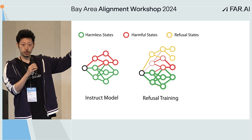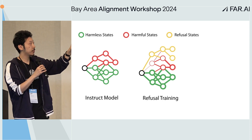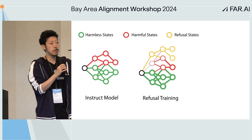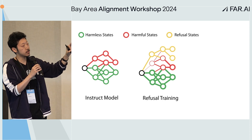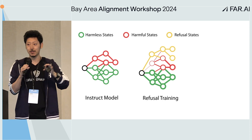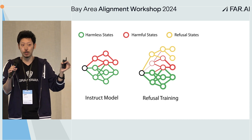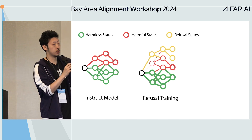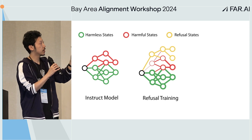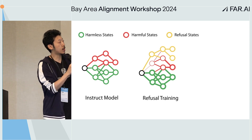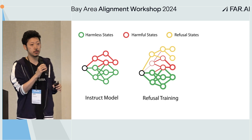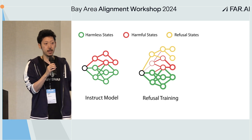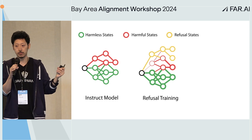This induces refusal states so that when the model encounters harmful requests, it goes into that state. But there's a large problem: models are very easily jailbroken. Once you bypass the initial classification of whether to refuse or not, you can get into harmful states — and all the harmful states are very well connected, so the model goes to the end and gives you all the harmful information.